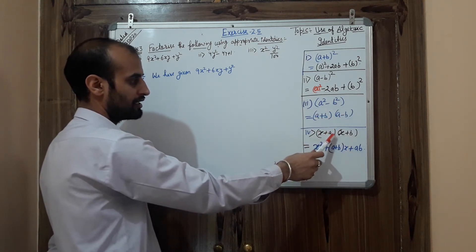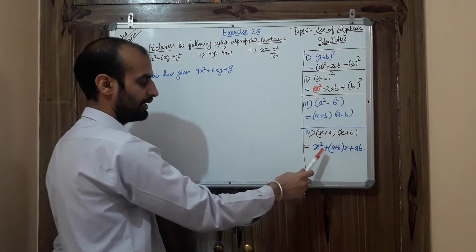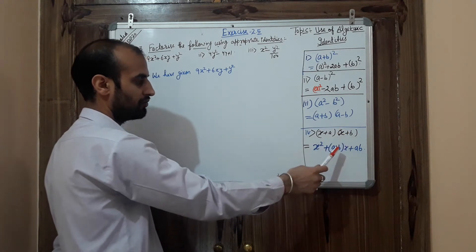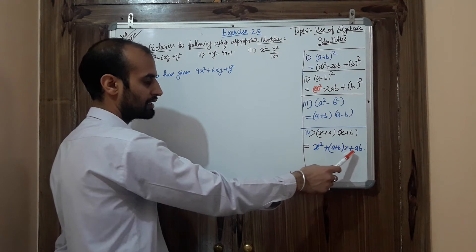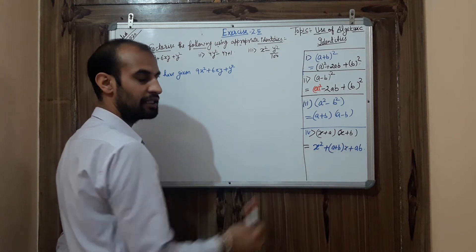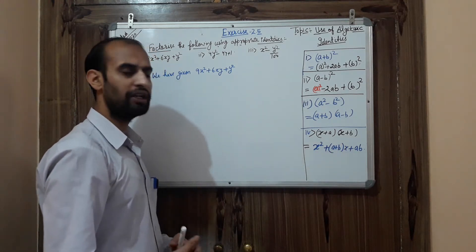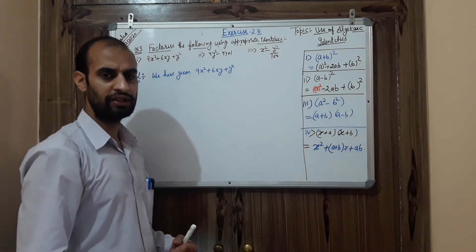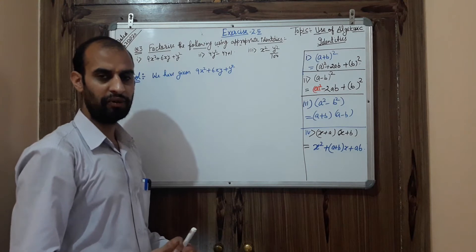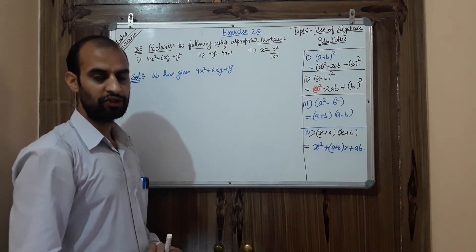The fourth identity: (x + a)(x + b) = x² + (a + b)x + ab. These four identities we are going to discuss, and we will see how we can use these identities in questions.